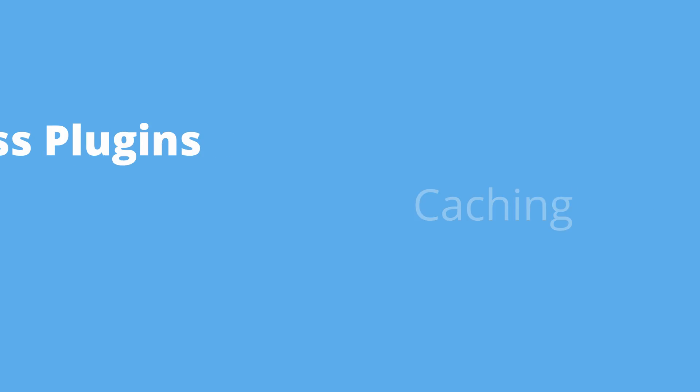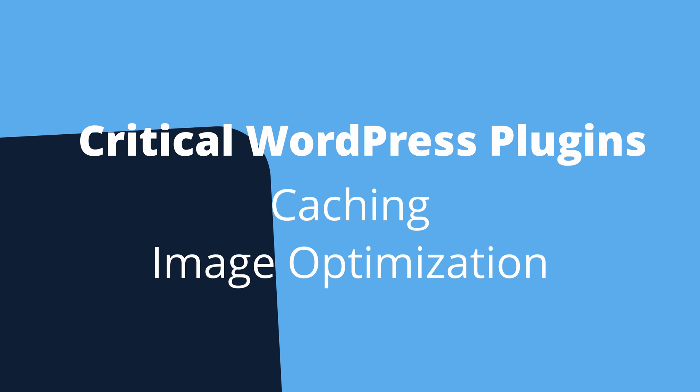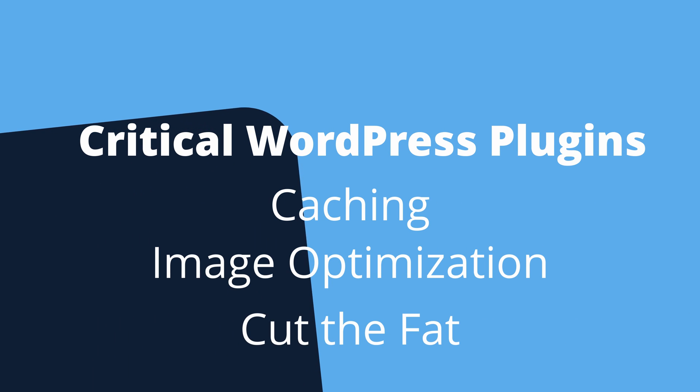Well, it's a combination of factors including the theme that you choose and just three plugins that fall into the following categories of caching, image optimization, and cutting the fat. In this video, I'll walk you through the plugins that I have installed on my websites and point you to other videos which will give you the exact settings for those plugins that I use as well. So if you're interested in speeding up your WordPress website, let's get right into it.